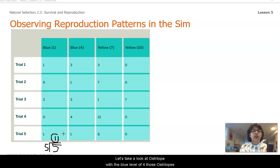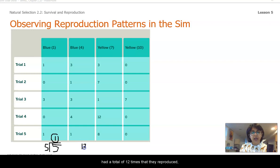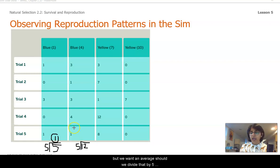Let's take a look at Australopes with a blue level of four. Those Australopes had a total of 12 times that they reproduced, but we want an average. So we divide that by five, and we get an average of 2.4.